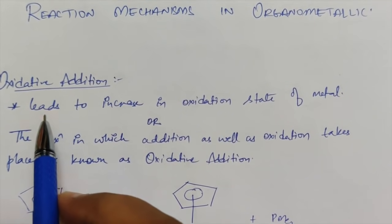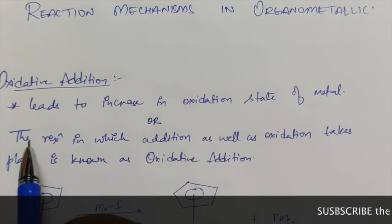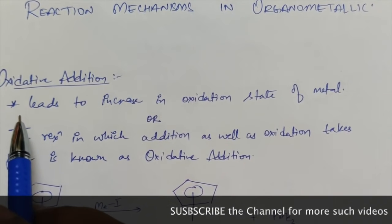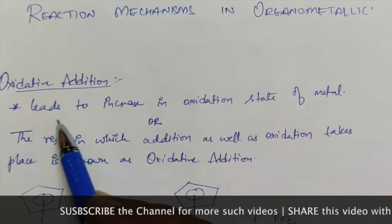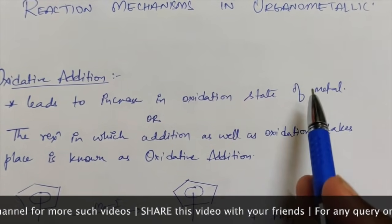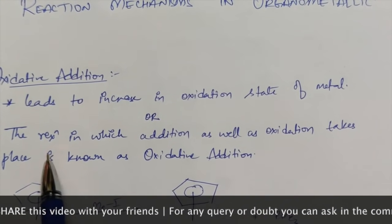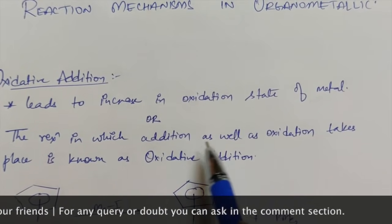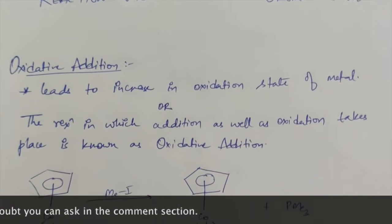First of all we have oxidative addition. As the name suggests there will be oxidation and addition of something. The key point to remember is that it leads to an increase in oxidation state of the metal. So the oxidation state of metal increases — there is oxidation of metal happening — and the reaction in which addition as well as oxidation takes place is known as oxidative addition.